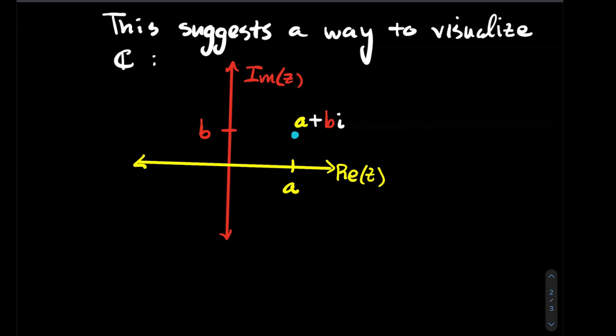When I want to talk about a complex number a plus bi, I'm going to go over a units on the real axis and up b units on the imaginary axis. I can visualize a plus bi as that point in the plane.